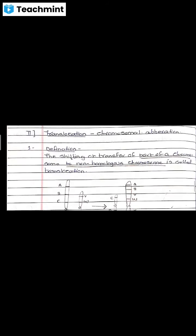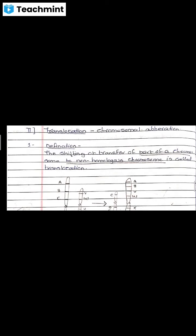Translocation is a type of structural aberration. Translocation means there is a shifting or transfer of a part of a chromosome. Here, the segment is transferred into a non-homologous chromosome — that is what is called translocation. Normally in translocation, the transfer of the segment takes place between two different, non-homologous chromosomes.